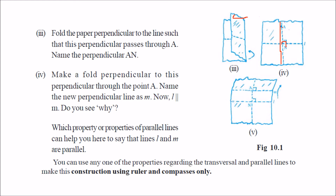Again take point A and fold the paper again in this direction. When you fold it, there will be a line again. This angle is 90 degrees, this angle is 90 degrees, and we know that for two lines to be parallel, the corresponding angles have to be equal. That is why these two lines are parallel.